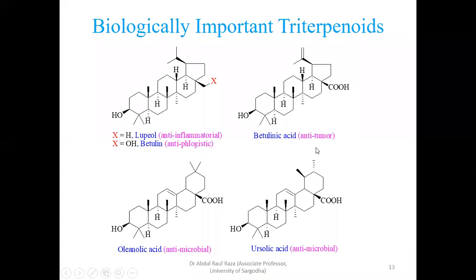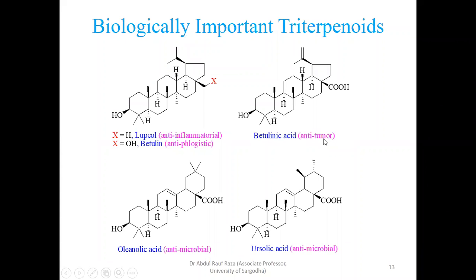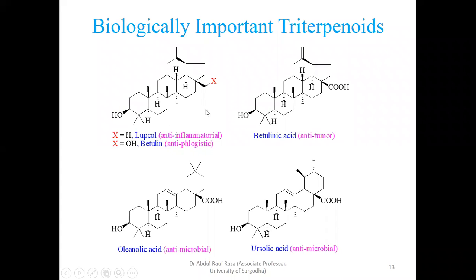This is called betulinic acid. Betulinic acid is anti-tumor — it reduces tumor growth. Tumor is the abnormal growth of malignant cells, where cell mass and density increase causing malignancy. Betulinic acid decreases the risk of tumor — it doesn't let the tumor grow. Biosynthetically these compounds are very similar; just a structural variation at one position changes the biological activity.